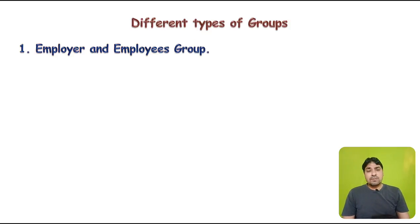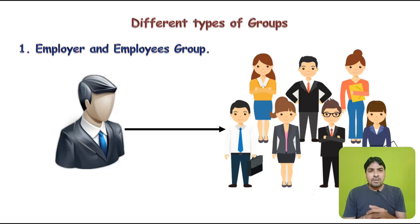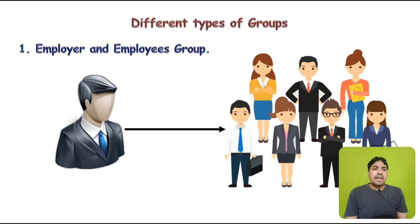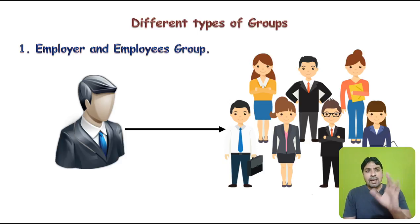Now, different types of groups can be insured under a group insurance policy. The first type is the employer and employee group. The employer, shown on the left side of the screen, represents the employees on the right side. The employer can represent the employees and prepare a group insurance contract to insure all of his employees, whether in a college management or a factory setting.